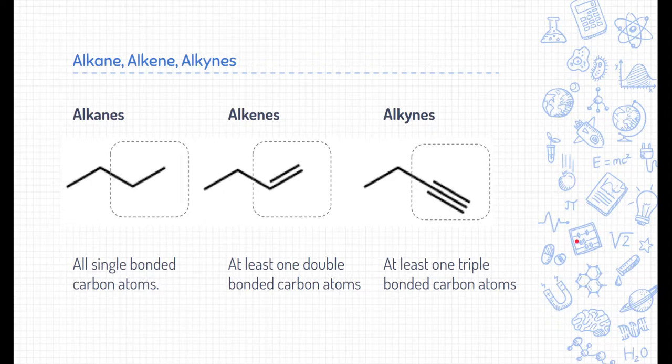Another set of functional groups are alkanes, alkenes, and alkynes. These are focusing on the carbon chains themselves. If the carbon chain is made of all single-bonded carbon atoms, then we call that an alkane. If there's at least one double-bonded carbon atom, we call them alkenes. And if there's at least one triple-bonded carbon atom, we call them alkynes.